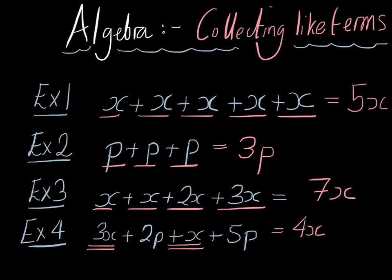And now let's do the same with p's. We have here positive 2p's, and we're going to add another 5p and we're going to get 7p. So it's going to be plus 7p.